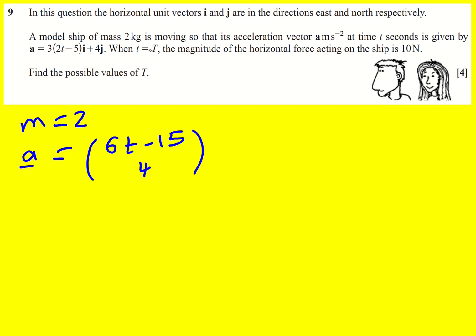Now here's the key bit: when t is equal to capital T, the magnitude of the horizontal force acting on the ship is 10 Newtons. So that's the resultant force coming from both the x and the y directions. Find the possible values of t.